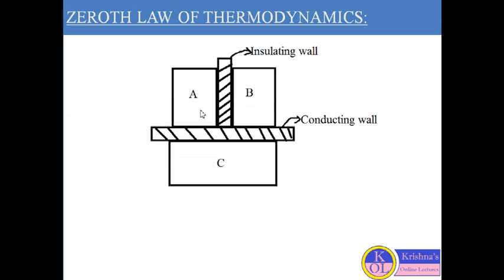Body A is separated from body C by one conducting wall, and body B is also separated from body C by the same conducting wall. A conducting wall is a wall which is a very good conductor of heat, so heat transfer is possible between body A and C, and between body B and body C.